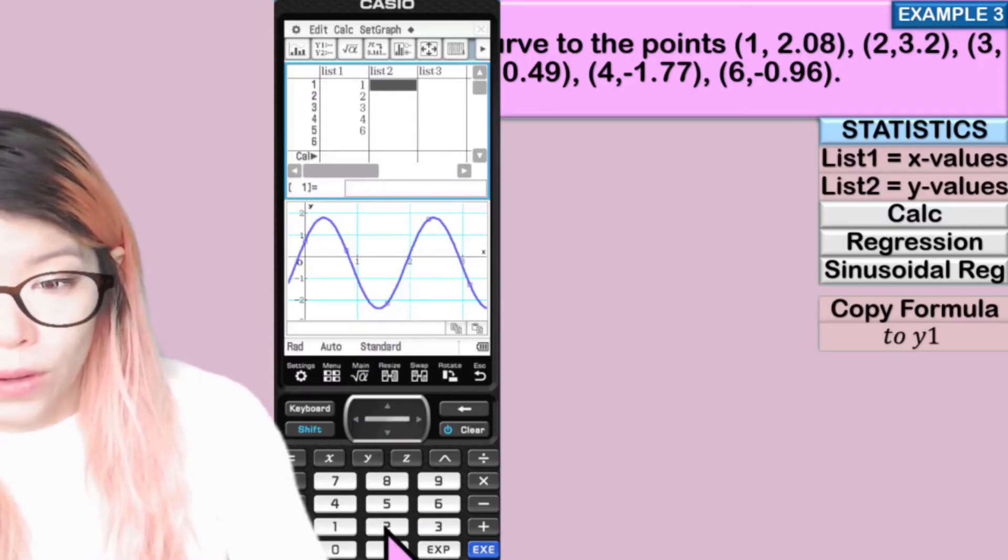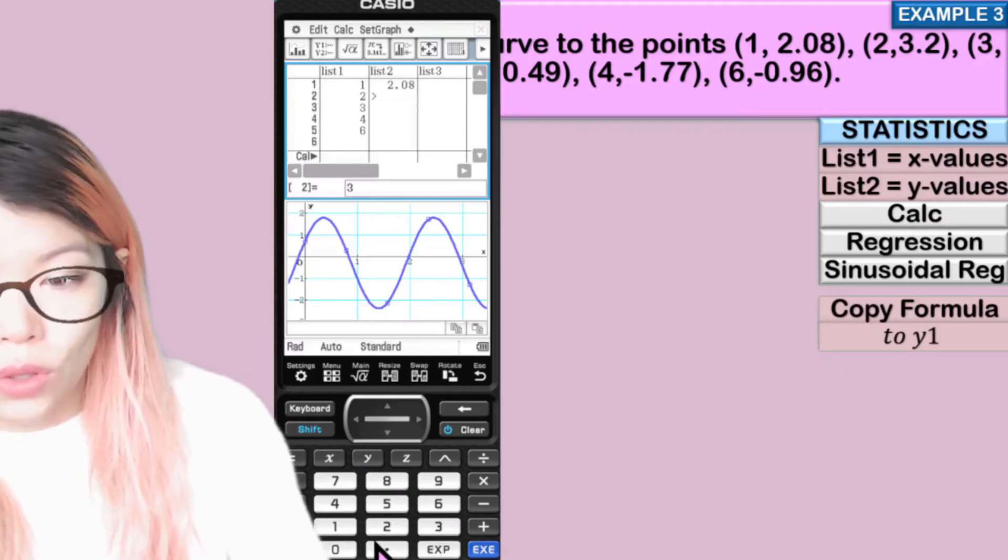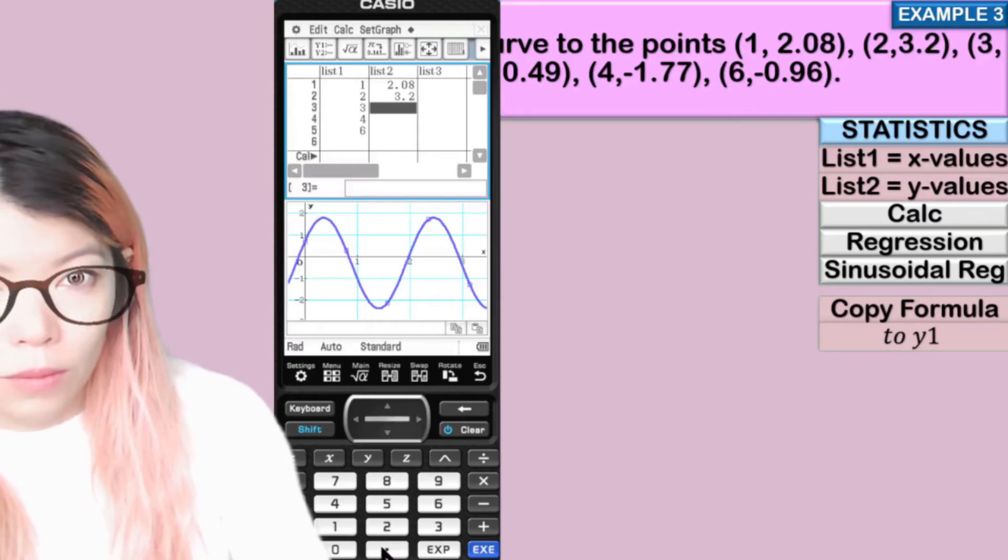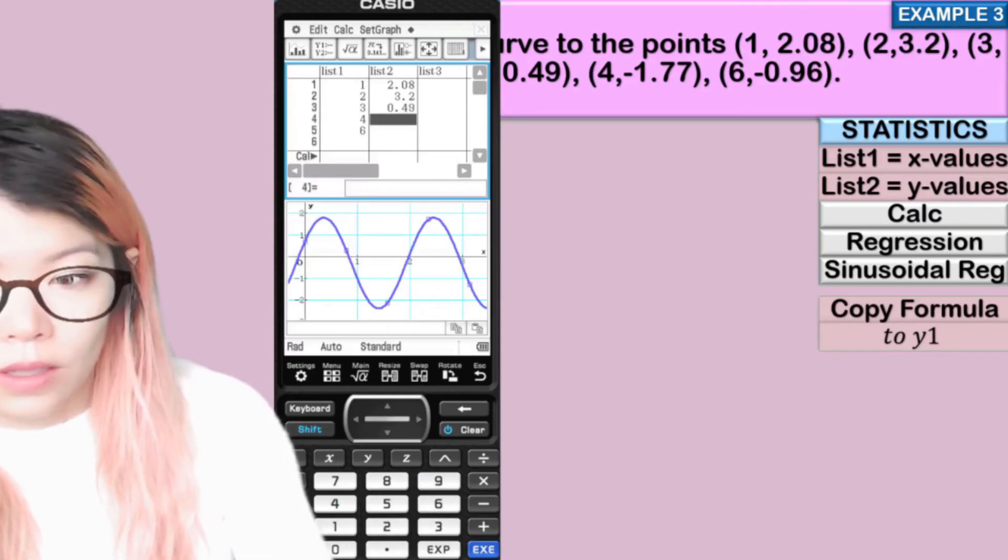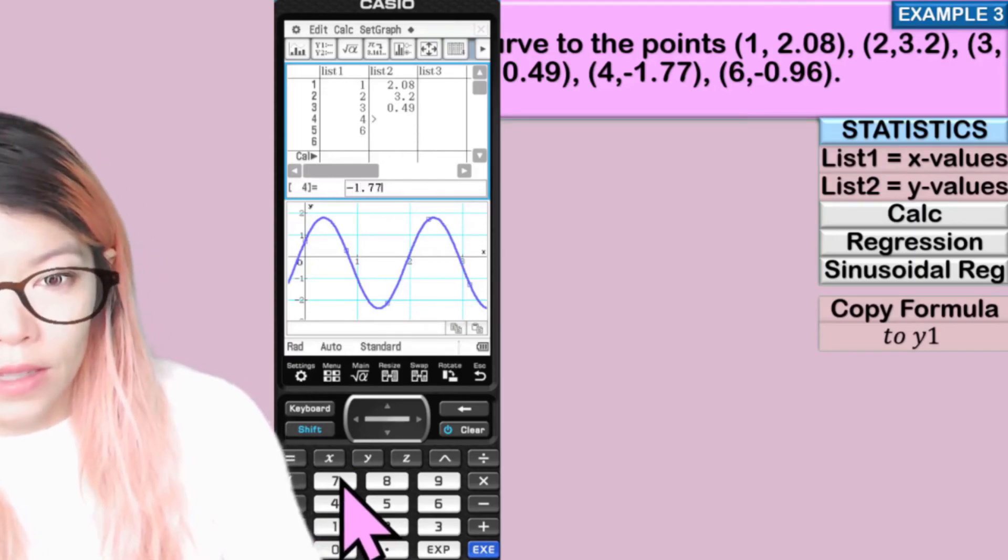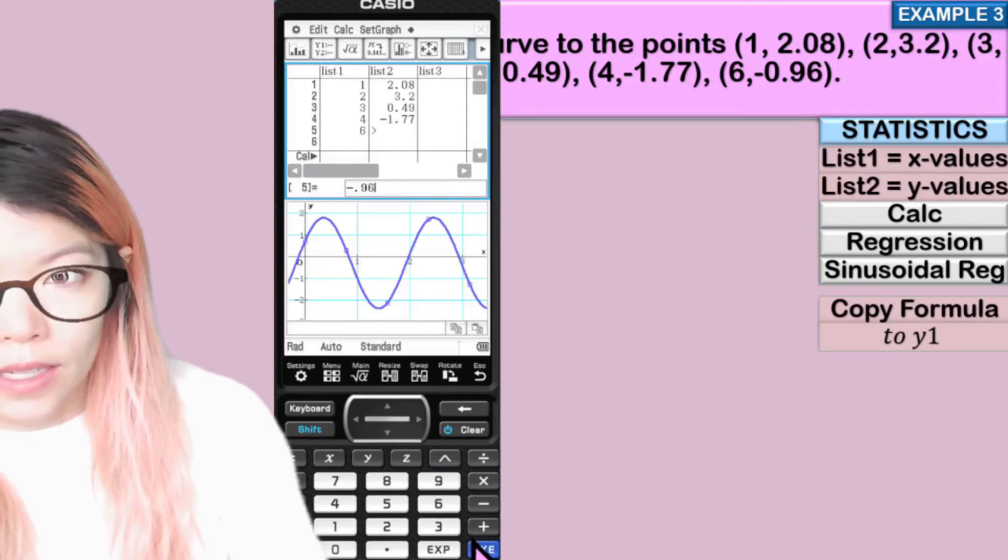In list two, we have 2.08, 3.2, 0.49, negative 1.77 and negative 0.96. Enter.